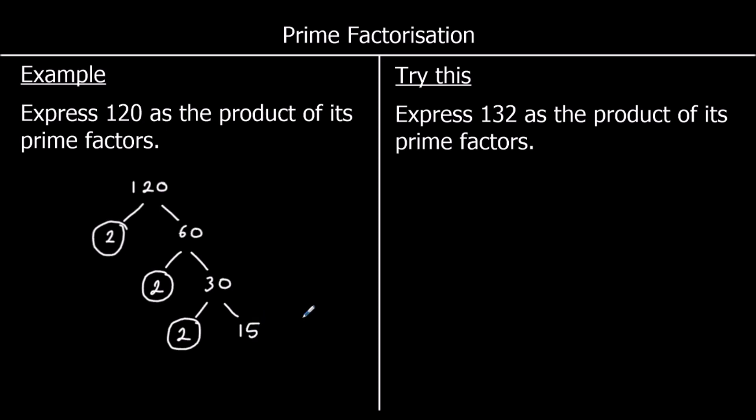Can I break 15 down more? What numbers multiply to make 15? 3 times 5. So 3 is prime, you can't break 3 down anymore. 5 is also prime, I can't break 5 down anymore. So I've broken 120 down until I've just got prime numbers left.